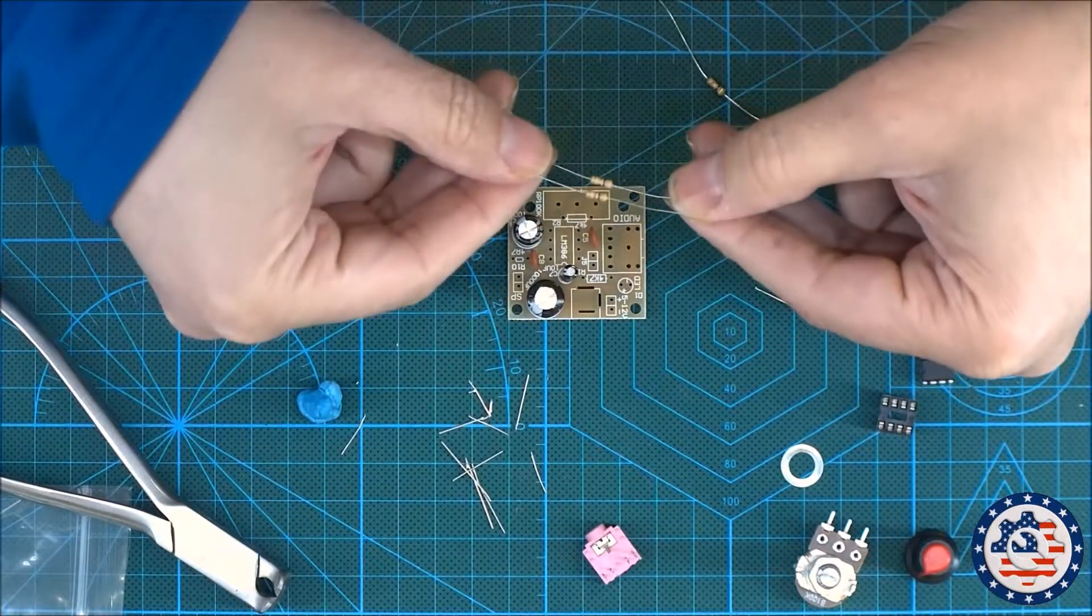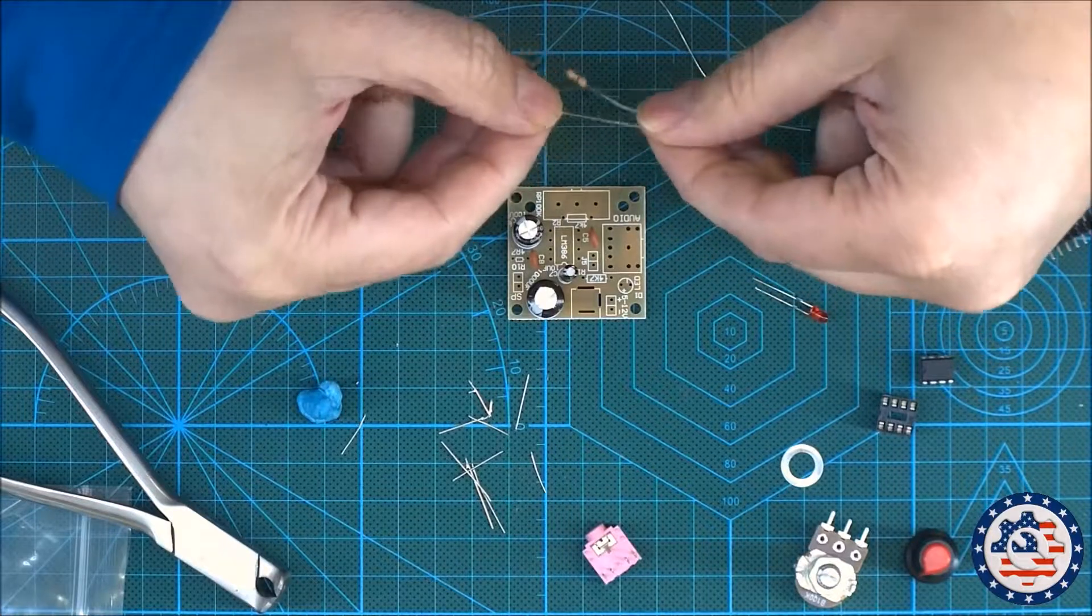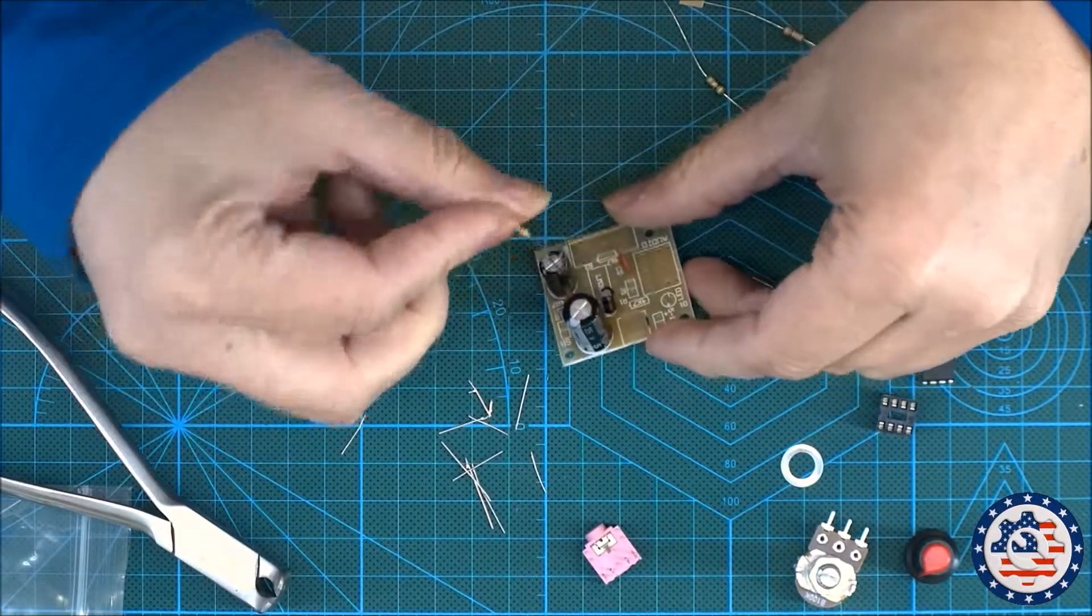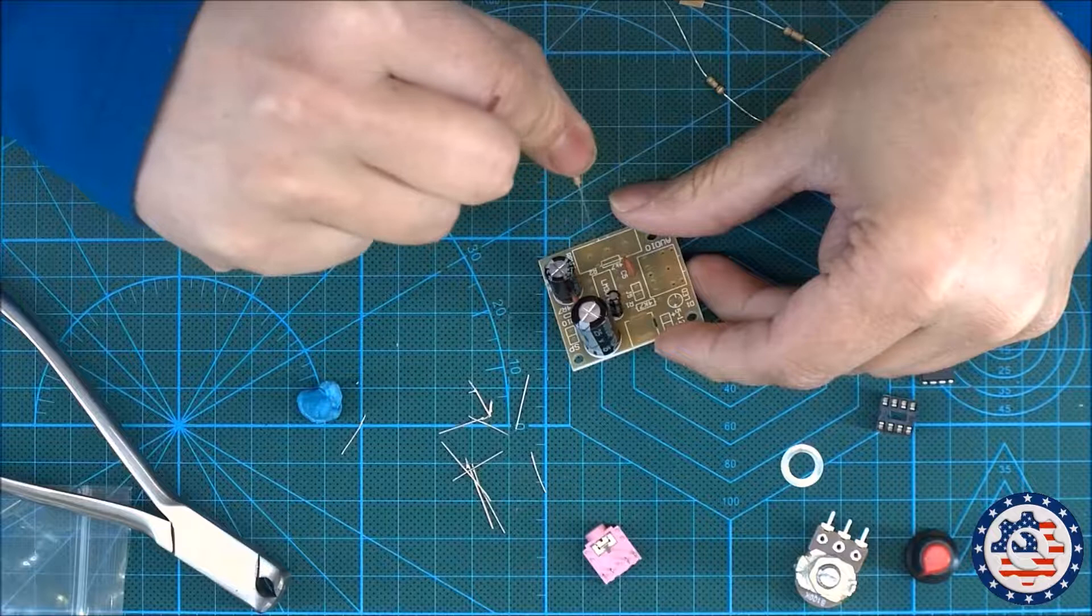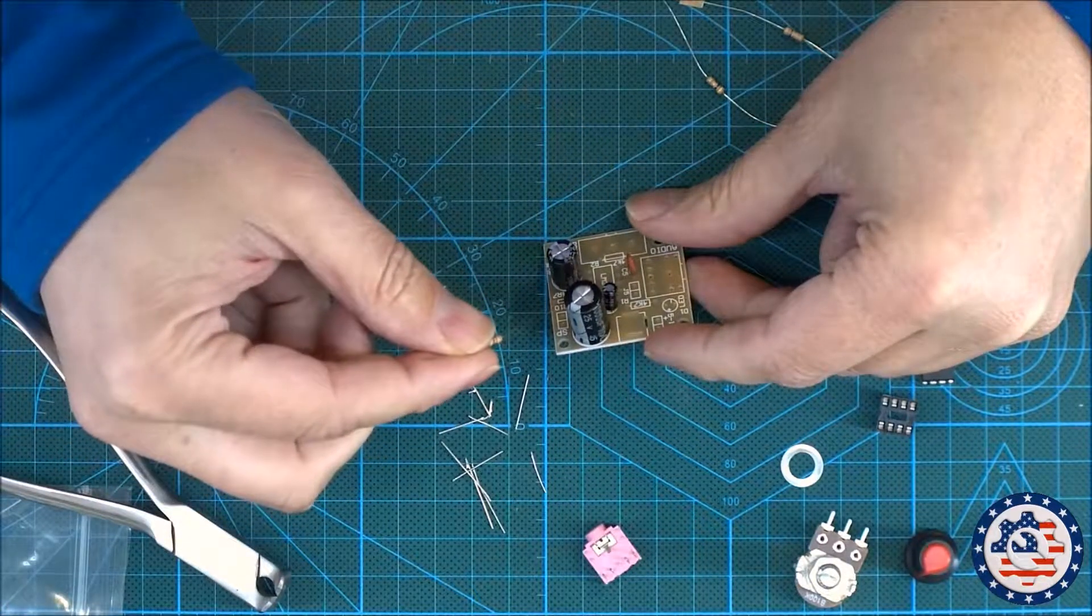Resistors. So I have two of the same. That's I believe the 4.7K. So you can really tell. So there's two resistors at the same value there. And then there is another resistor R10.